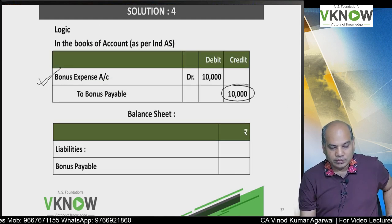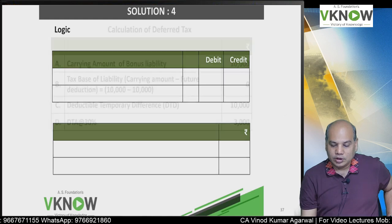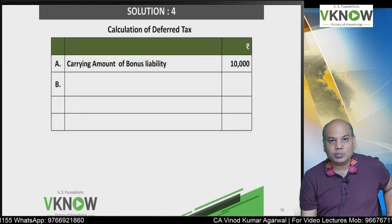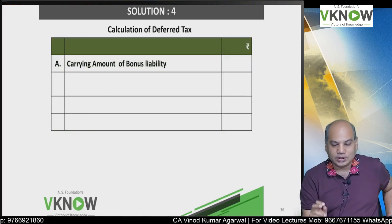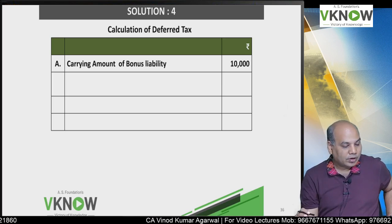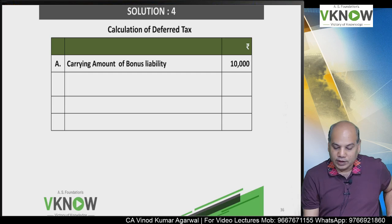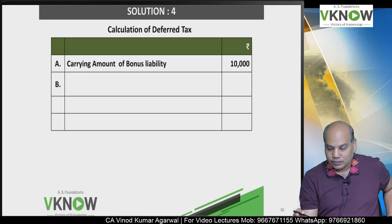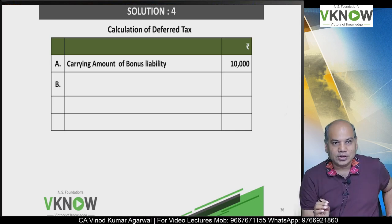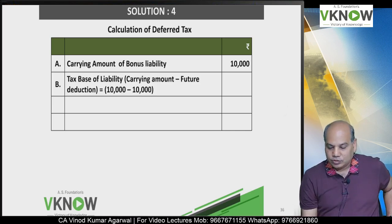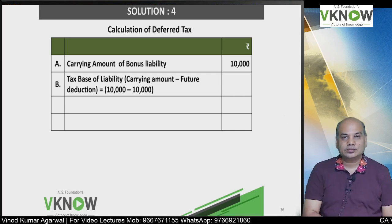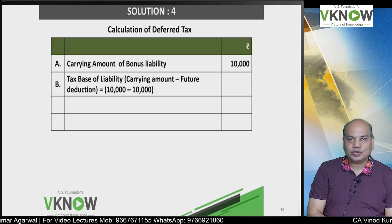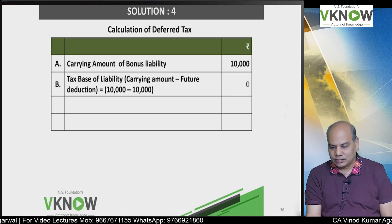The second way to understand is with the help of a formula. The formula is: carrying amount of liability minus future deduction. Step 1 — calculation of deferred tax: carrying amount 10,000. This 10,000 will be allowed as a deduction in the subsequent year, so future deduction is 10,000. Therefore, tax base of the liability = carrying amount minus future deduction = 10,000 minus 10,000 = 0.